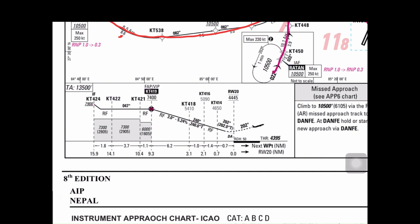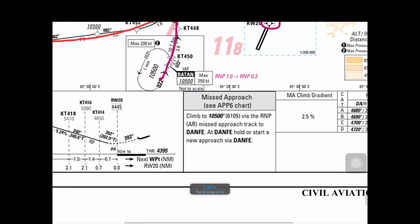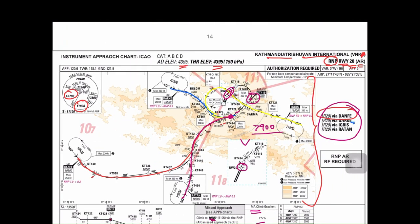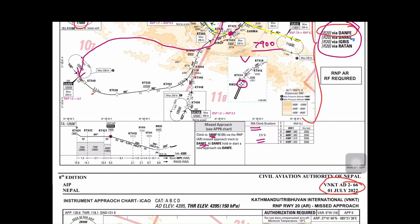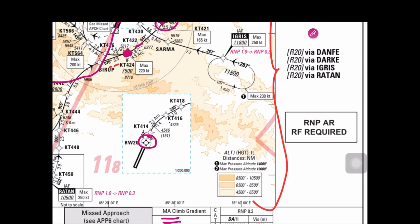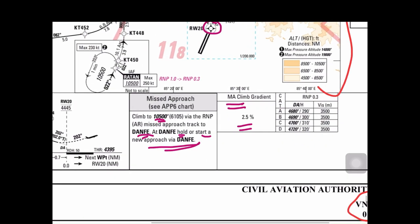Next is the missed approach procedure. The missed approach procedure refers you to the APP6 chart. For the missed approach, you climb to 10,500 feet with a climb gradient of 2.5%. Using RNP procedure, you track back to DAFE. So when you conduct a missed approach, you fly away from the runway, report at DAFE, hold there, and start a new approach from DAFE. This is why DAFE was explained first — it's the largest approach, and it stabilizes the aircraft for landing.